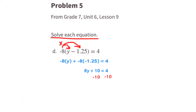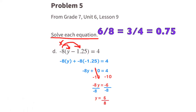Subtract 10 from both sides, leaving negative 8y equals negative 6. Divide both sides by negative 8: negative 8y divided by negative 8 gives positive y, and on the right a negative divided by a negative is positive, so y equals 6 over 8, which simplifies to three-fourths, or 0.75.